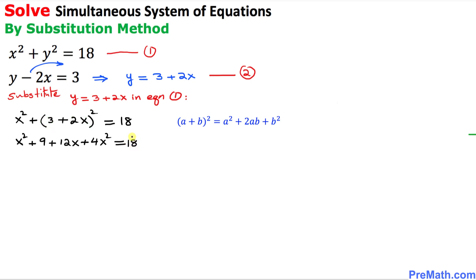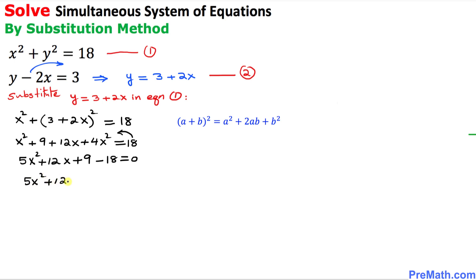Now let's move the 18 to the left hand side. We combine 4x² and x² to get 5x², then plus 12x plus 9 minus 18 equals 0, which simplifies to 5x squared plus 12x minus 9 equals 0.